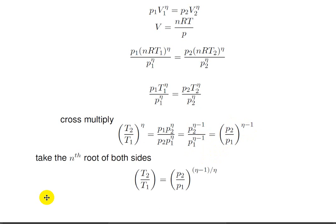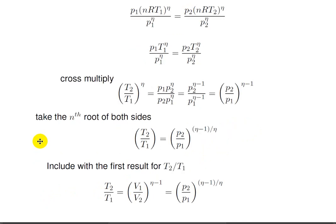In this next step, we take the nth root of both sides, thereby isolating the ratio T2 over T1. We now include this result with the first result that we had for T2 over T1, and have the polytropic process for an ideal gas expressed as a ratio of temperatures, a ratio of volumes, and a ratio of pressures.